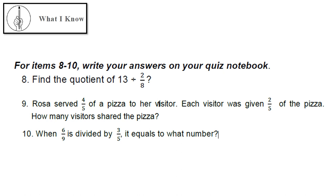For items 8 to 10, write your answers on your quiz notebook. Number 8: Find the quotient of 13 divided by 2/8. Number 9: Rosa served 4/5 of a pizza to her visitor. Each visitor was given 2/5 of the pizza. How many visitors shared the pizza? And number 10: When 6/9 is divided by 3/5, it equals what number?